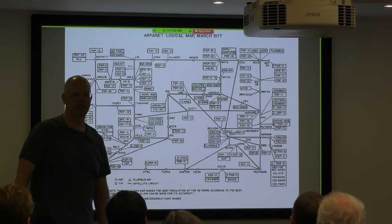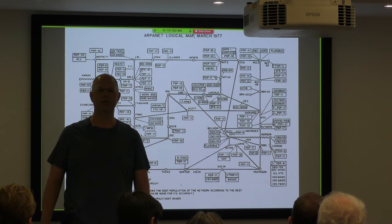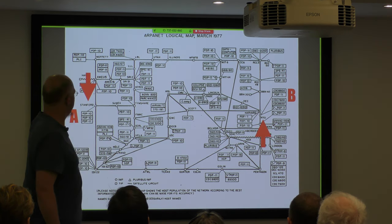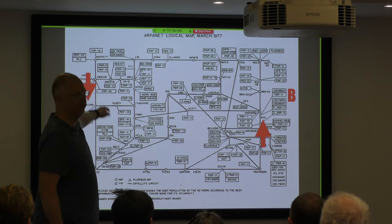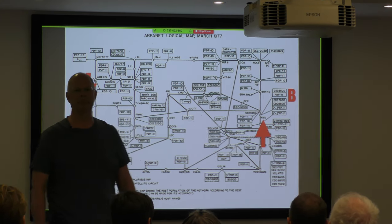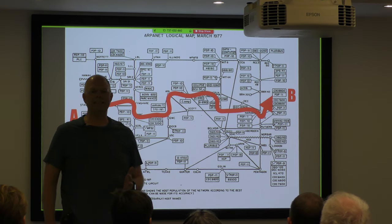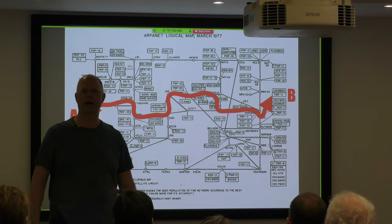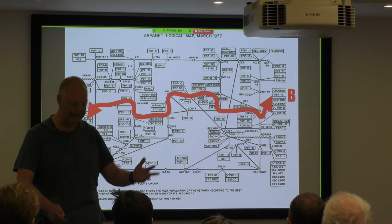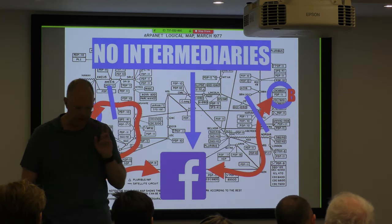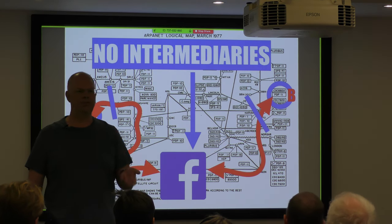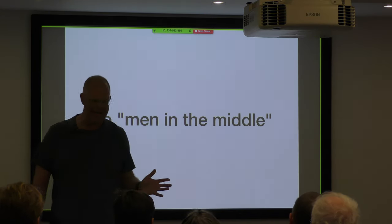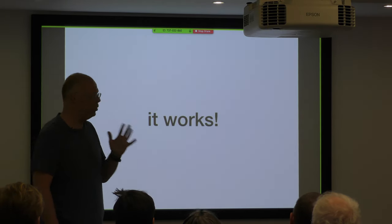Here is an ARPA net logical map from 1977. If we have on the left Alice, who is A, and she's at Stanford on a PDP-11, and we have Bob at NYU on the right also using a PDP-11 — if they are communicating with each other, there is a direct link between the pair of them. They probably have a TCP connection using user bin talk or ytalk. There would be no firewalls, no intermediaries, no men in the middle — direct communication, and this would actually work.